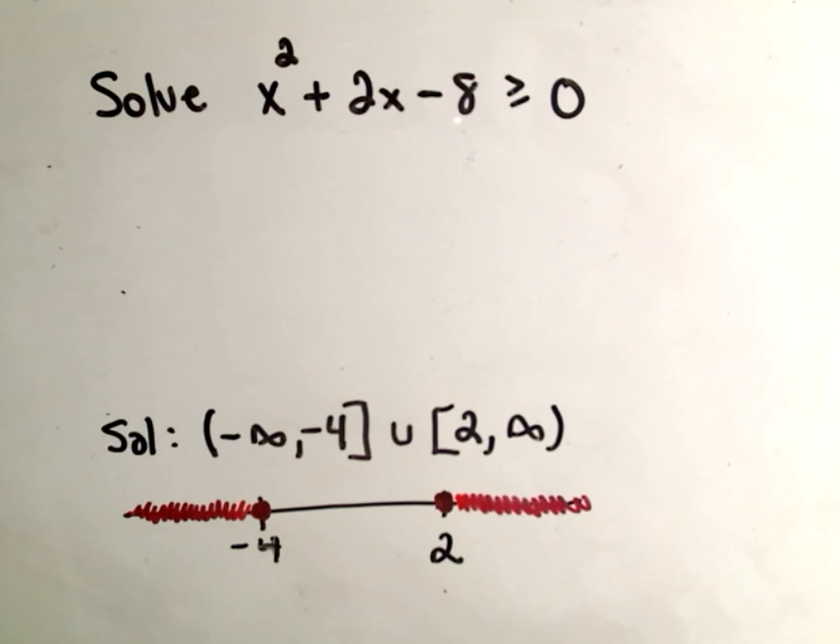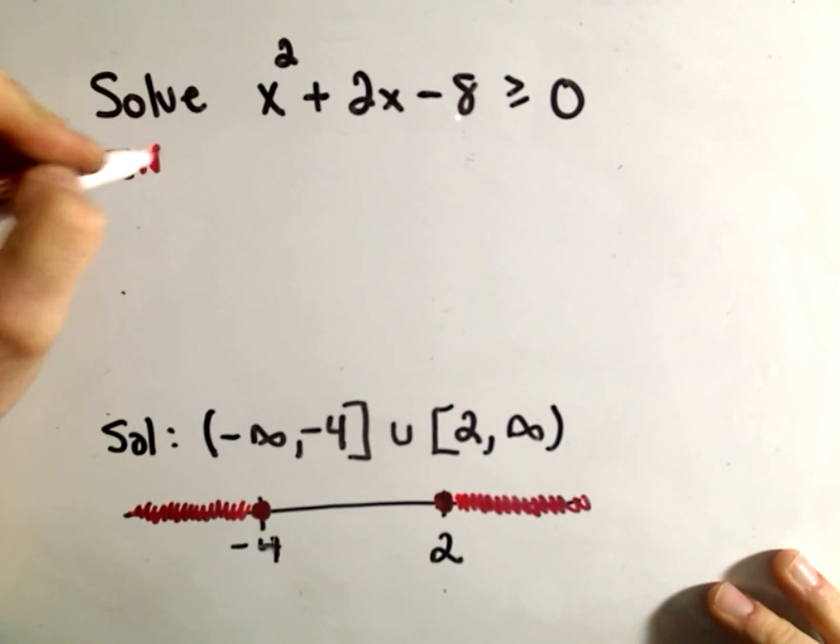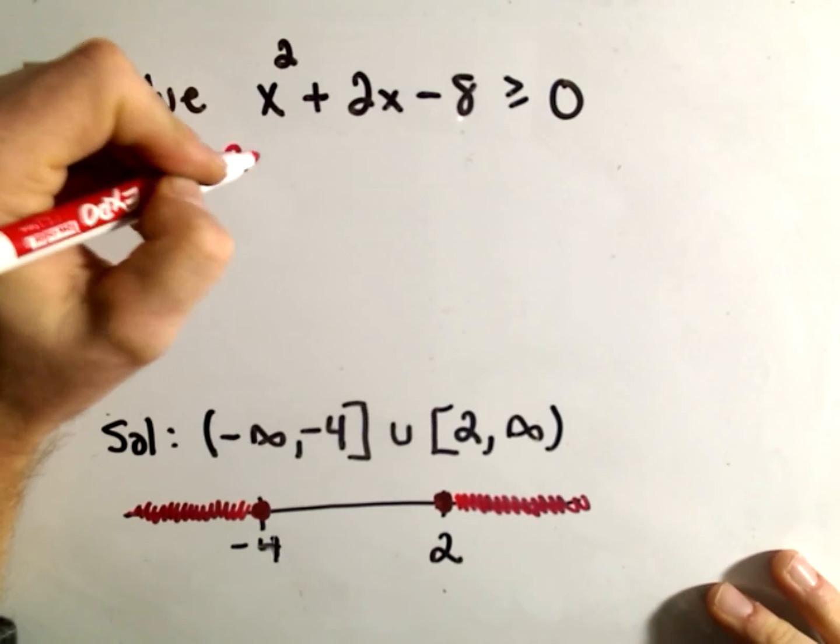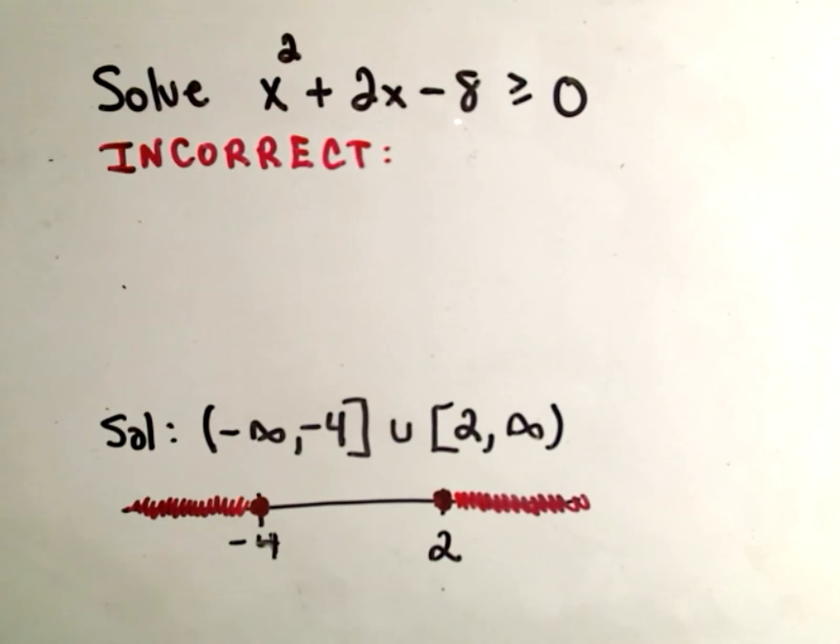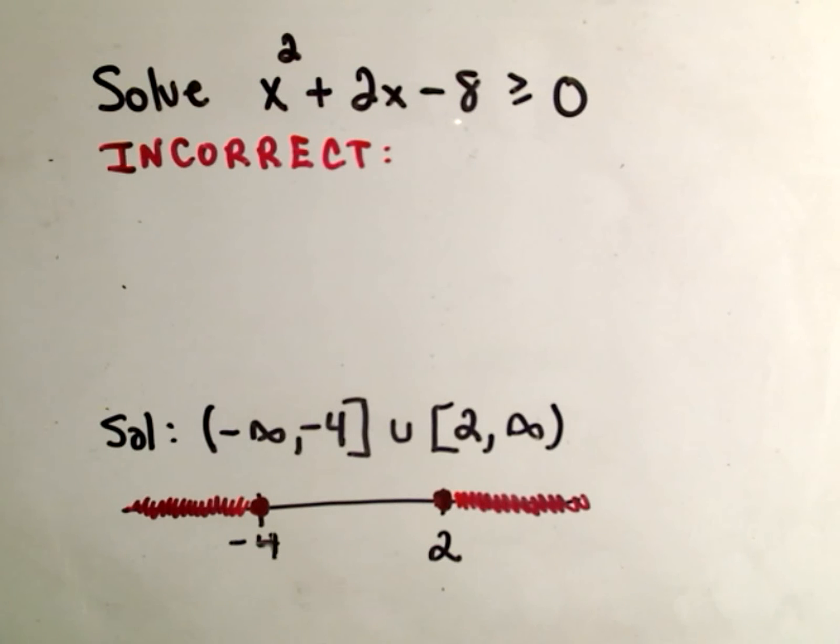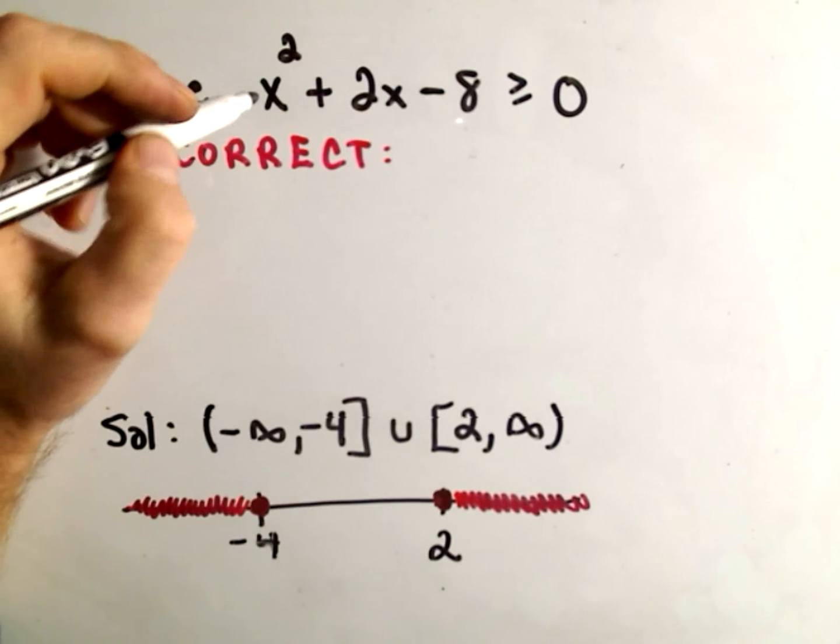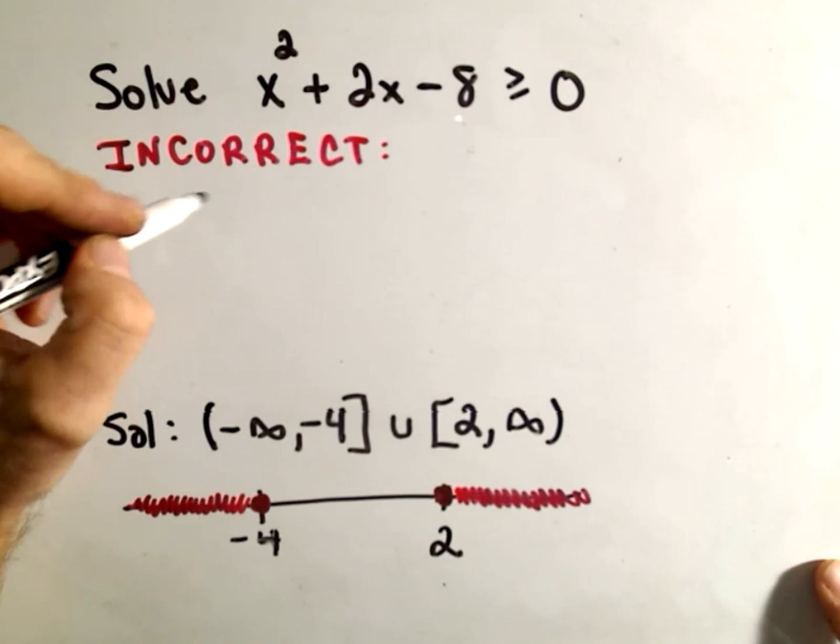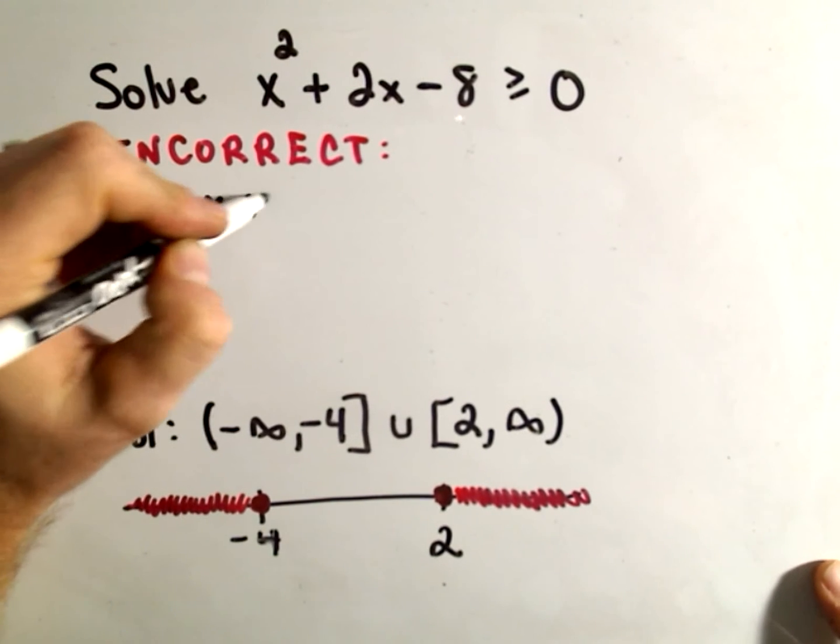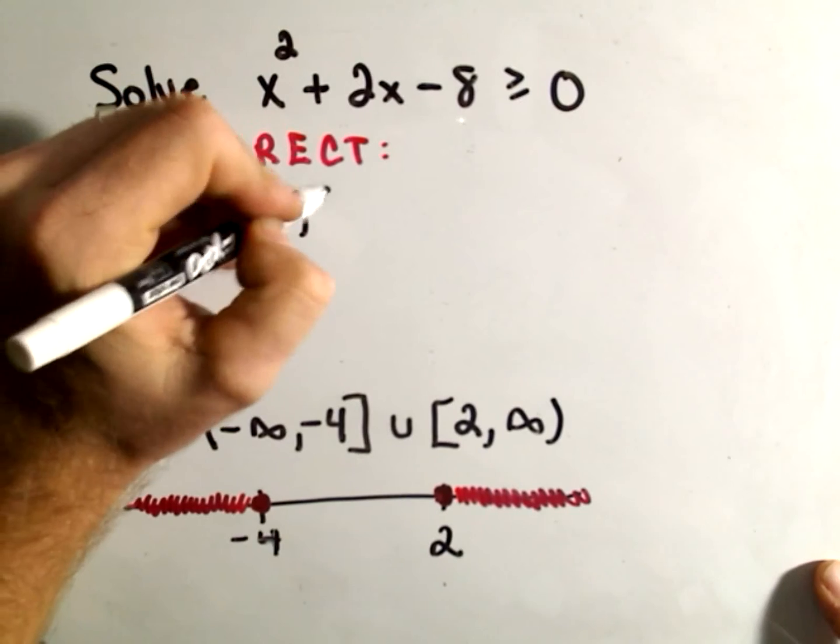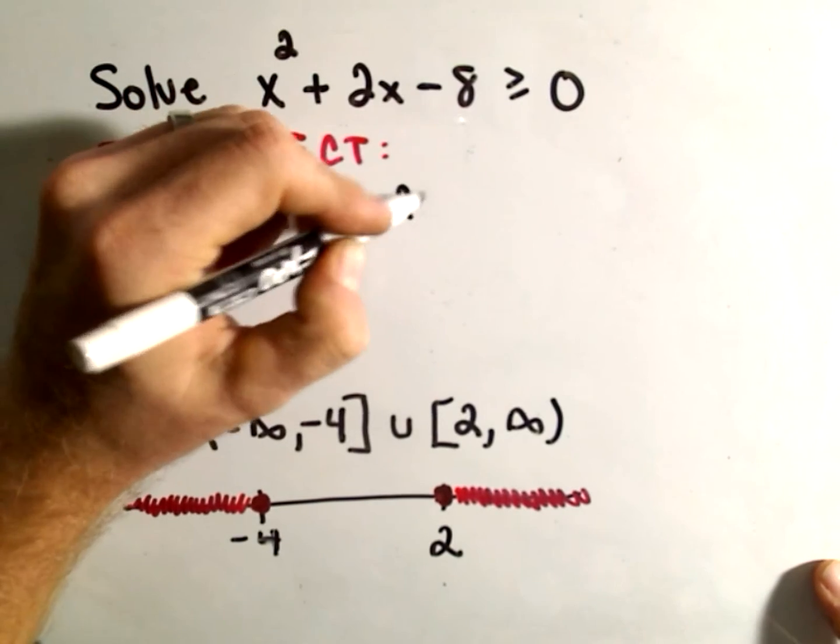A lot of times, what people will do, so again, what I'm about to do is very much incorrect, so don't do what I'm about to do. But it's basically, I see it all the time. Okay, so you can factor x squared plus 2x minus 8, we factored that a second ago, as x plus 4 and then x minus 2.